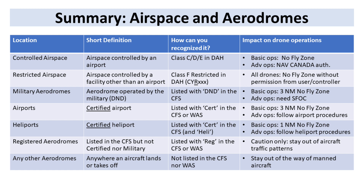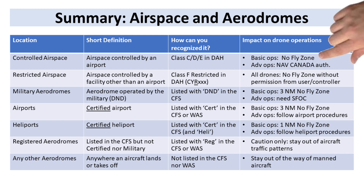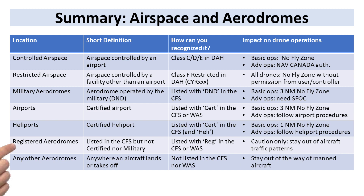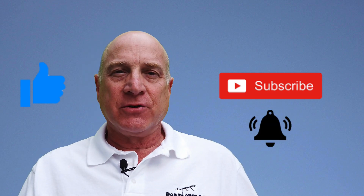Let's quickly summarize airspace and aerodromes. Controlled airspace, Class F restricted airspace, military aerodromes, and certified airports and heliports are all no-fly zones for basic operations drone pilots. For pilots with their advanced certification, flights are possible in these areas with various degrees of permission required. You also need to be aware of registered aerodromes and the possibility of unlisted aerodromes in the area of your flight, and stay well out of the way of manned aircraft. If you found this video helpful, give me a thumbs up and drop a comment below. Please subscribe and ring that bell for notifications of future videos. Thanks for watching.